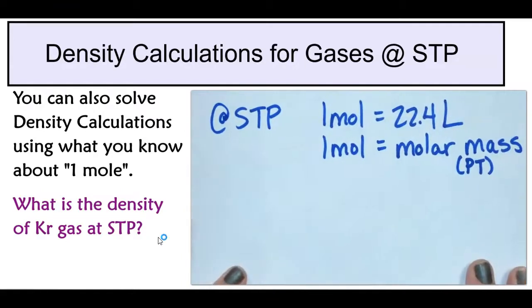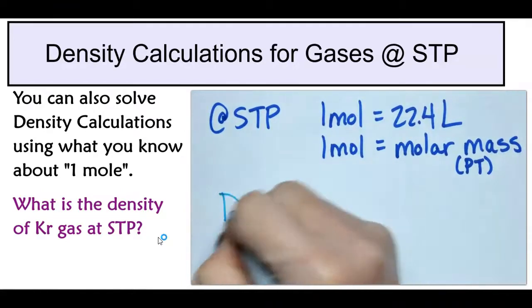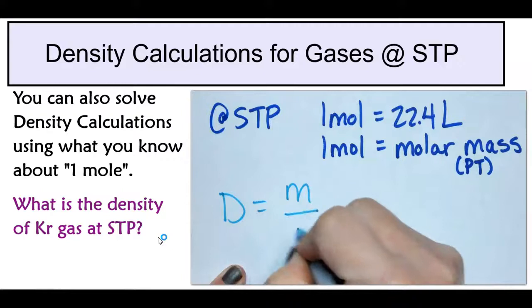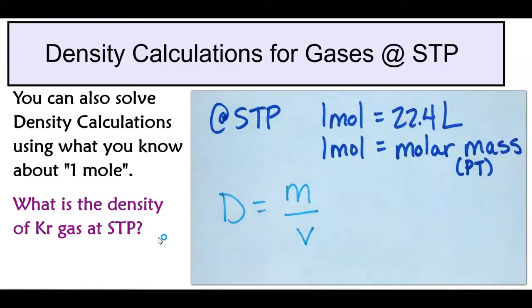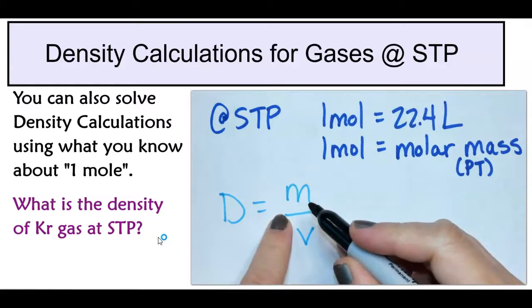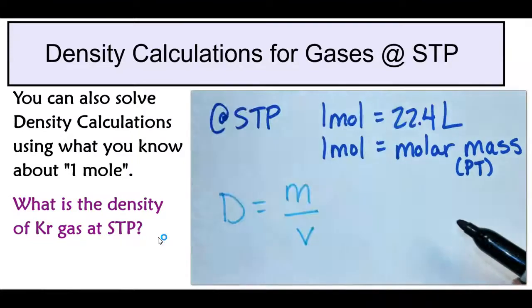What we also know about density is that it is equal to mass divided by volume. So this means that I can go to the periodic table and find the mass of krypton, 83.798.